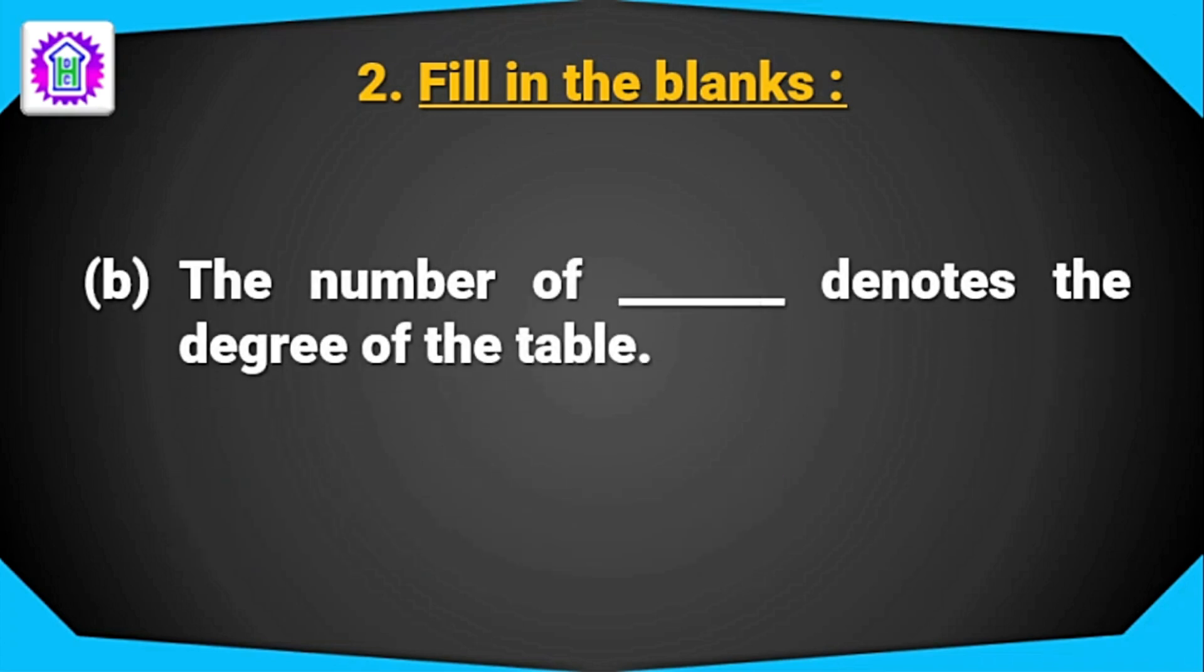Question number B, the number of dash denotes the degree of a table. The number of columns denotes the degree of a table. So the answer will be columns.